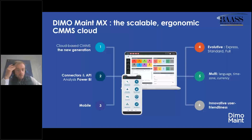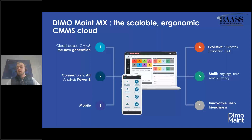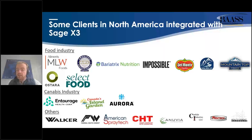Dimo MX is a standalone software — not within Sage X3, but we have a straightforward connector that I'll explain shortly. It's full cloud, hosted on Microsoft Azure, with APIs available to integrate not only with Sage X3 but with all of your information systems. It has a mobile app for iOS and Android that works without an internet connection — if you're within the plant or in a location without connectivity, you can work offline and synchronize when the internet comes back. It supports multi-language, multi-time zone, multi-currency, and is super easy to use, fully web and mobile. We already have clients integrated with X3 — many in the food industry, cannabis industry, and others.